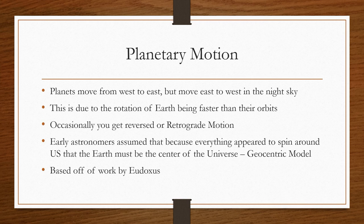Planets move from west to east past the stars, but rise east to west in our night sky. This has to do with the rotation of Earth being faster than the other planetary orbits. Occasionally, this movement will reverse or seem to go backwards, which is known as retrograde motion.